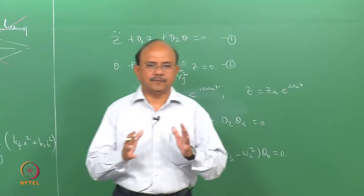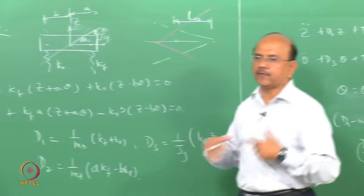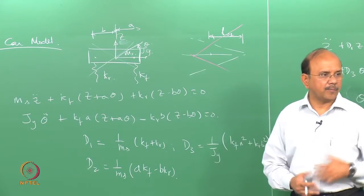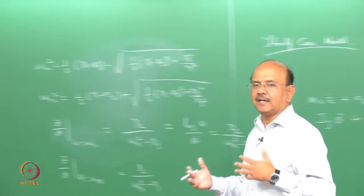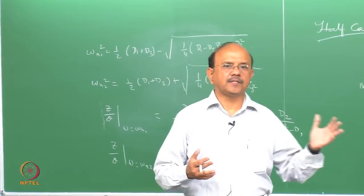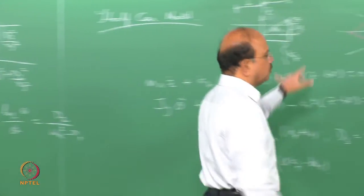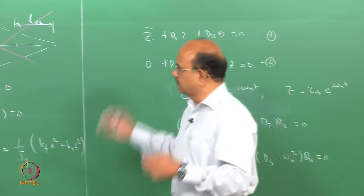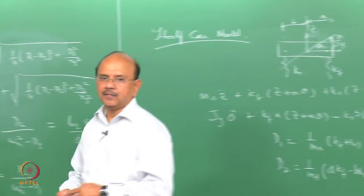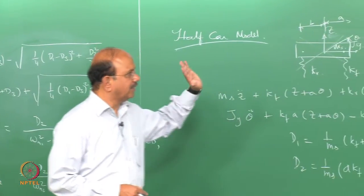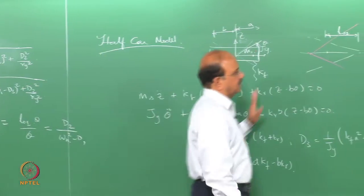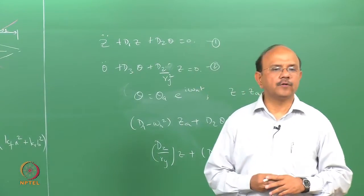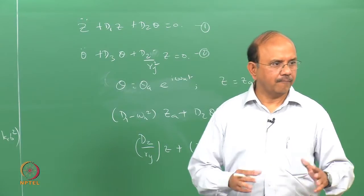If we can keep the two nodes at the seat locations properly, then a front wheel bump will not affect the rear passenger and vice versa. You can further simplify this and express it in terms of ry². This is the essential aspect of the half-car model from a simple perspective. This is a standard two-degree-of-freedom problem, similar to what you have done in vibration courses.